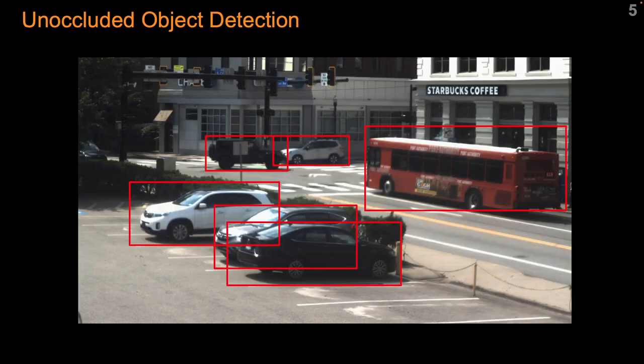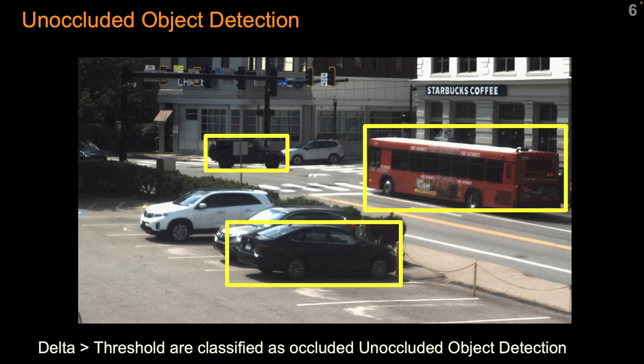In the time-lapse stream, detecting unoccluded objects is distinctly an easier problem to solve compared to annotating or distinguishing objects under severe occlusions. We compute the intersection between the bounding boxes — thresholding this intersection automatically detects a large number of unoccluded objects. Any of your favorite pre-trained detectors or segmentation networks can be used here.